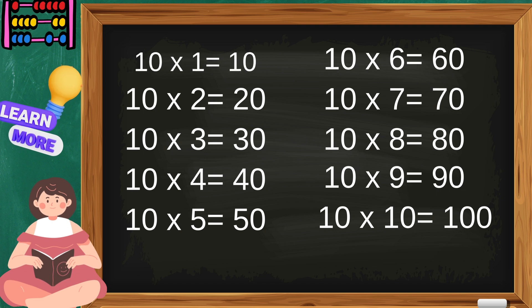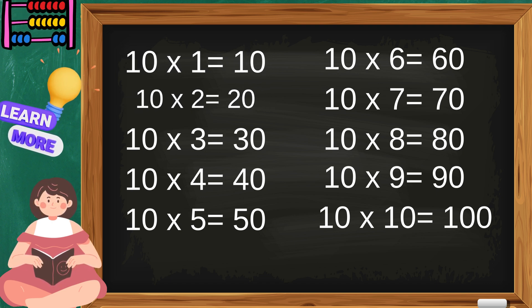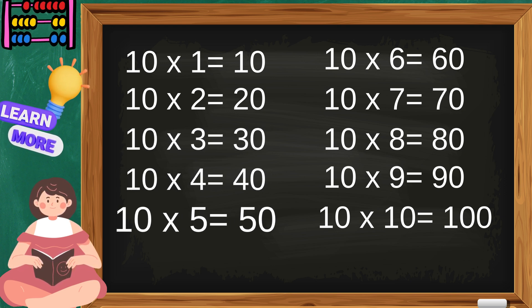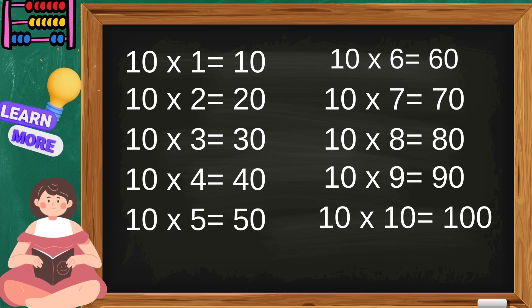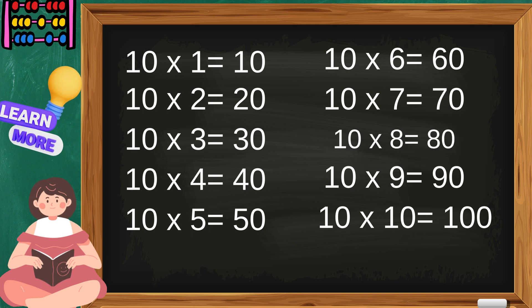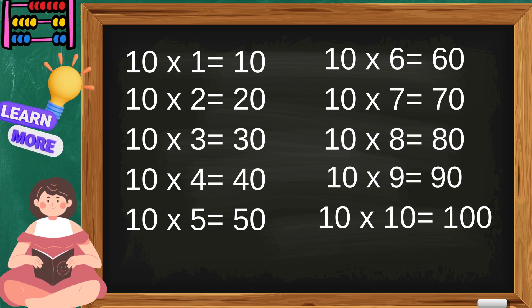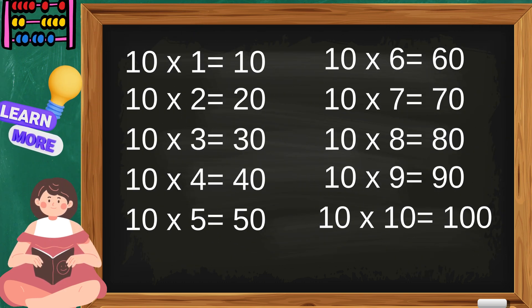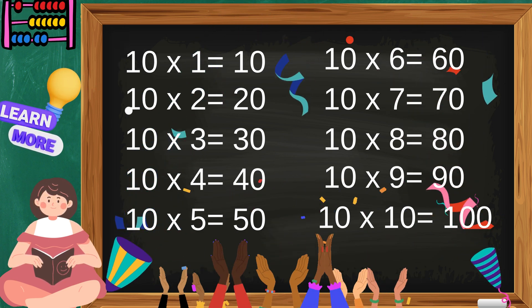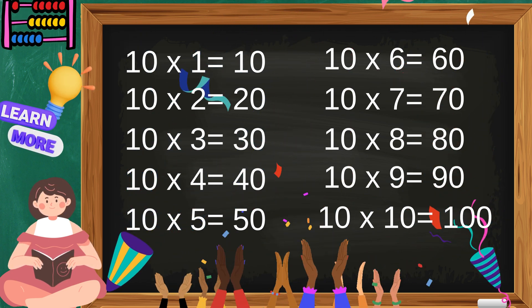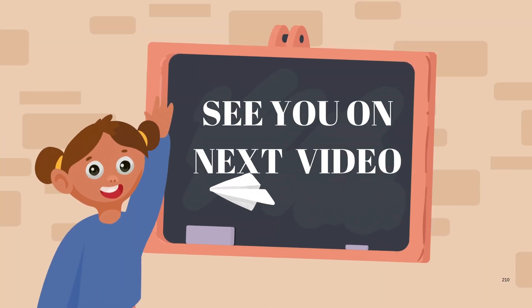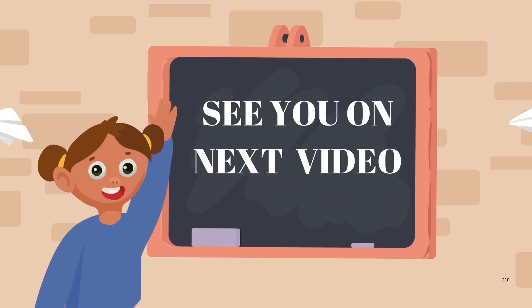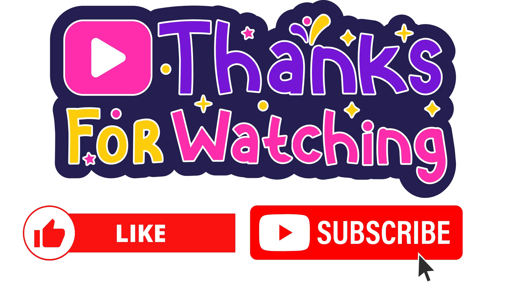Ten ones are ten, ten twos are twenty, ten threes are thirty, ten fours are forty, ten fives are fifty, ten sixes are sixty, ten sevens are seventy, ten eights are eighty, ten nines are ninety, ten tens are one hundred. Now you know the table of ten! Hooray! Hooray! Hooray!